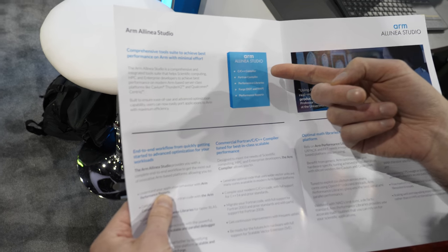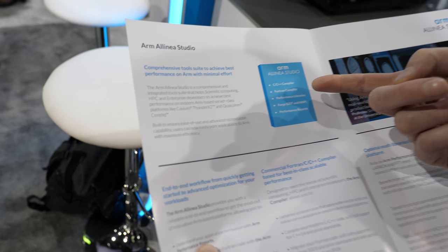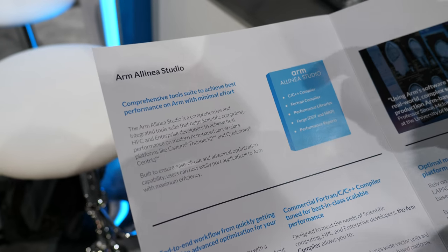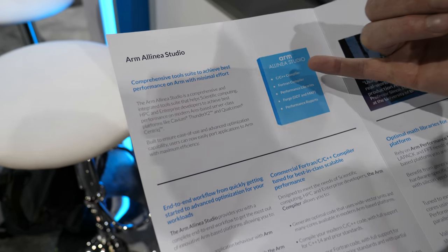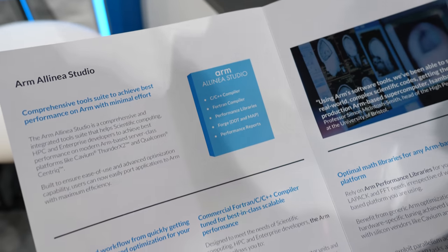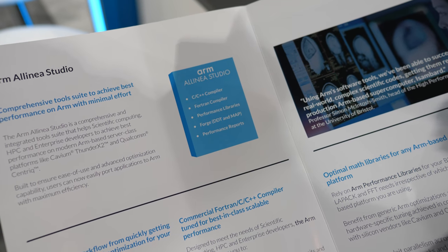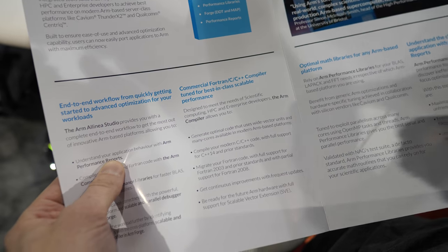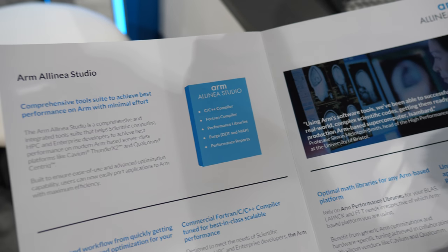You can see the key components called out here: we've got the C/C++ compiler, that's based on ARM where we upstream things back to the community. We've got a Fortran compiler — a lot of HPC codes are still written in Fortran. We've got the performance libraries, and the debugger and profiler tools as well.